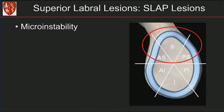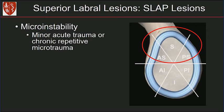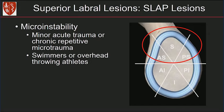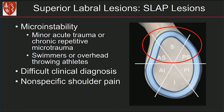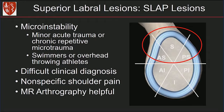Let's move on to our superior labral lesions, which are the SLAP lesions. These are commonly associated with micro-instability and result from minor acute trauma or chronic repetitive microtrauma. You can see this with swimmers or overhead throwing athletes. It's actually a difficult diagnosis because patients commonly present with non-specific shoulder pain. In these cases, MR arthrography is very useful.